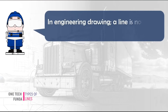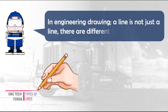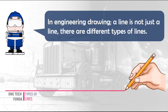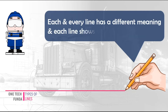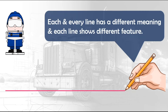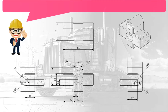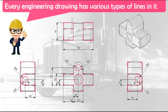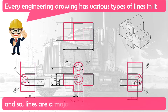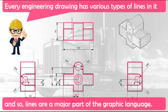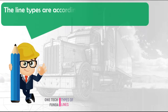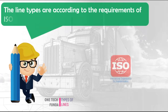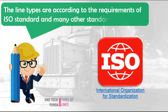In engineering drawing, a line is not just a line — there are different types of lines. Each and every line has a different meaning and each line shows a different feature. Every engineering drawing has various types of lines in it, and so lines are a major part of the graphic language. The line types are according to the requirements of ISO standard and many other standards.